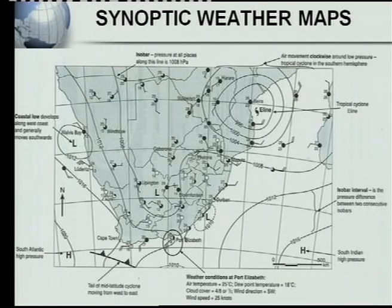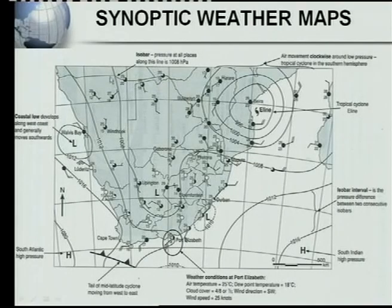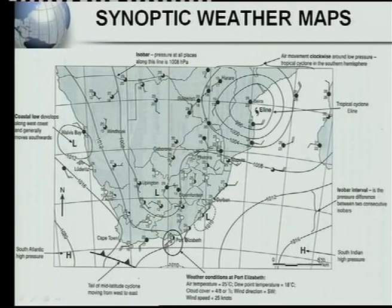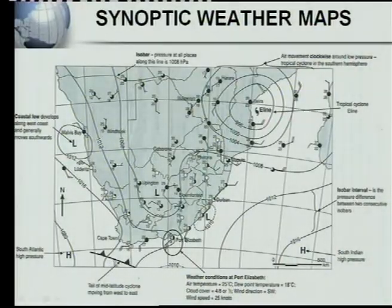I'd like to conclude with a few characteristics of synoptic weather maps. The lines on the maps are called isobars - pressure along this line would be, for instance, 1008 hectopascals. This is a coastal low that develops along the west coast and moves in this direction. You must know that this is the South Atlantic High Pressure and this is the South Indian High Pressure. Please remember - we marked it wrong in exams when students only wrote 'Atlantic high pressure' or 'Indian high pressure' without 'South.'